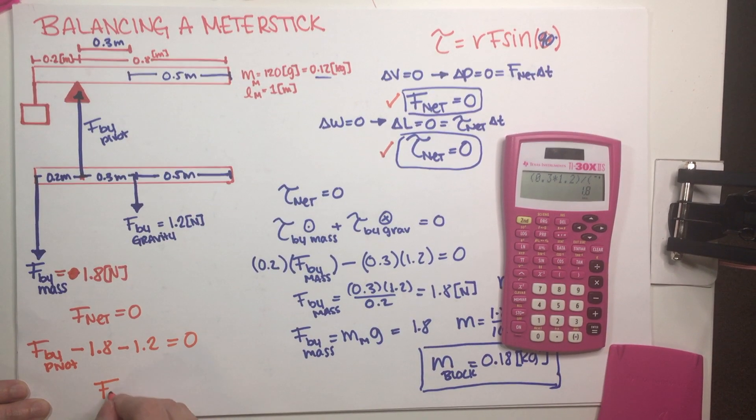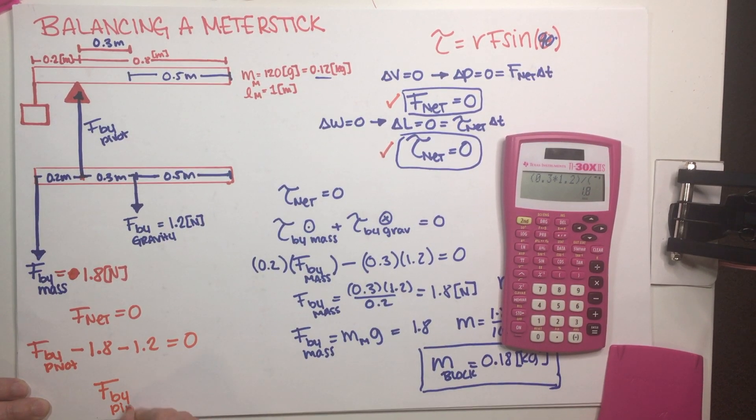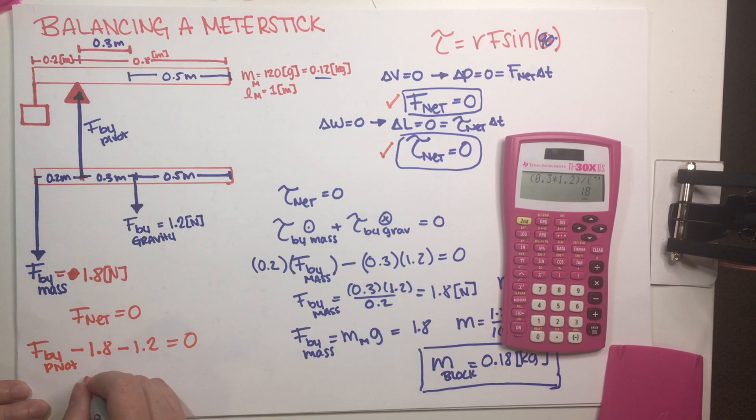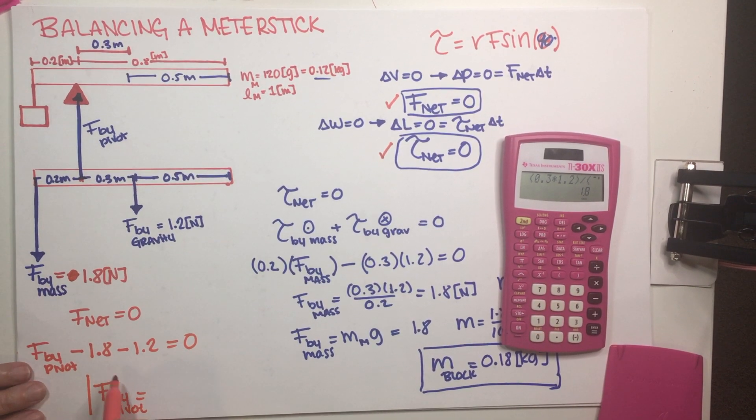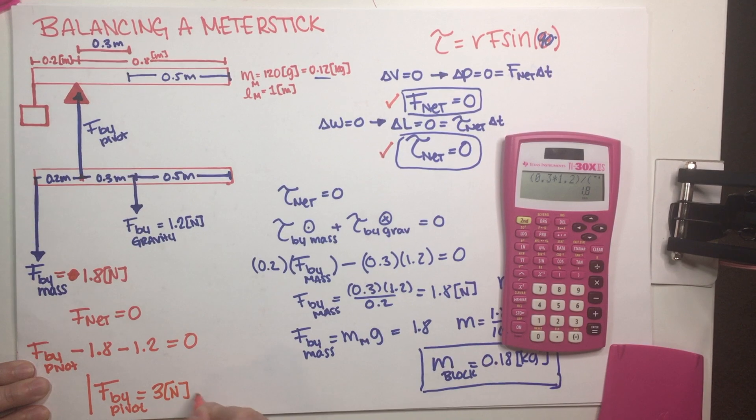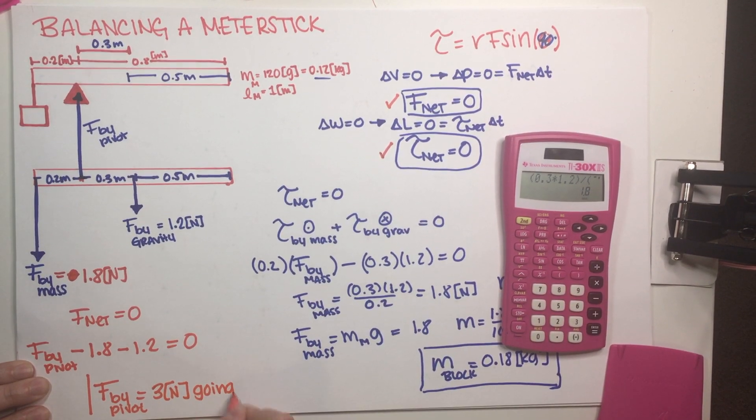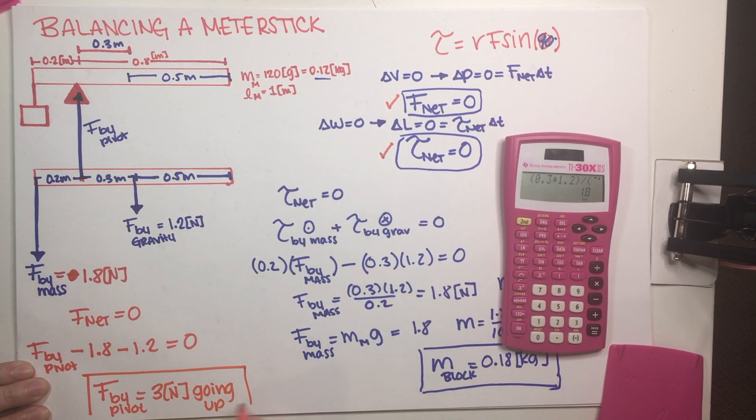So that just means that force by pivot, if everything is to stay stationary, that just has to be equal to 3 newtons going up magnitude and direction. So there we go, 3 newtons going up.